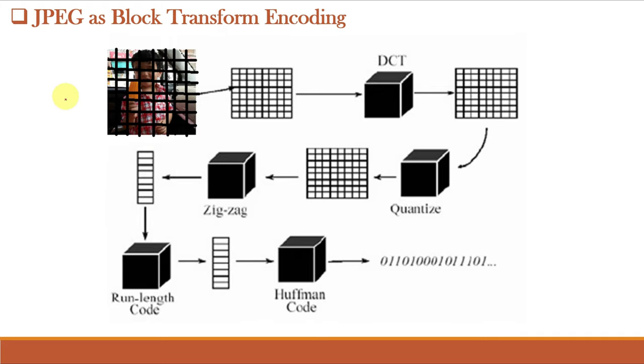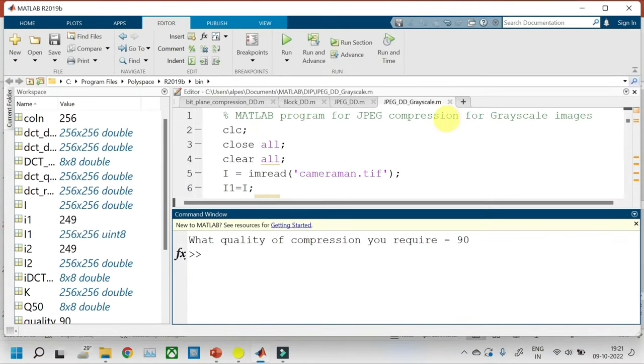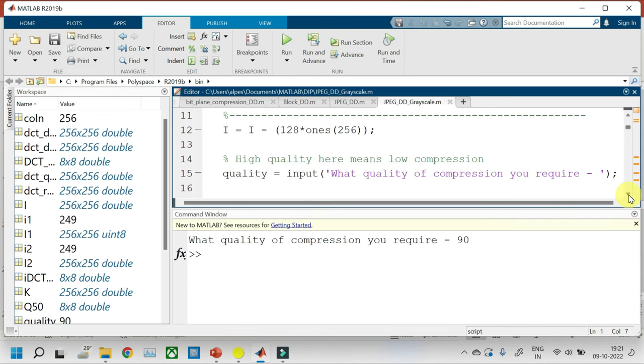Let us implement JPEG compression in MATLAB. This is the MATLAB program for JPEG compression for grayscale images. And the high quality here means low compression and low quality means high compression.